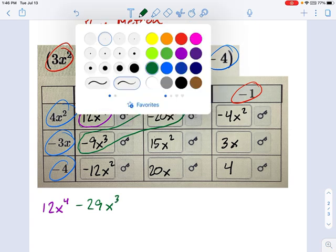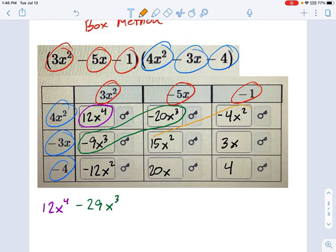And what's our next like term? Hope I don't run out of colors here. We've got x squareds for the oranges. So that'll be, well, let's see. Negative 12 plus 15 is positive 3. Minus 4 is negative 1. So that's minus x squared.